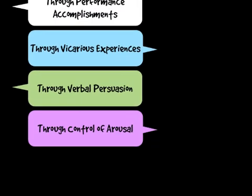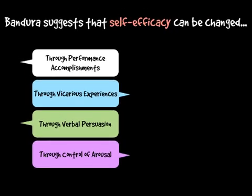The last way self-efficacy can be changed through Bandura's model is through the control of arousal. Nervous performers will become anxious, worried, and psychologically unfulfilled. Their heart rate increases, they start to become sweatier, their hands can start shaking, or their muscles can provide involuntary contractions. We need to reduce that level of nervousness by controlling their arousal levels.